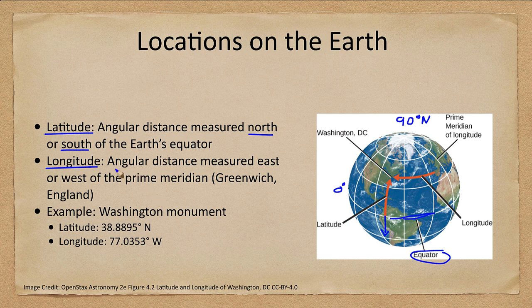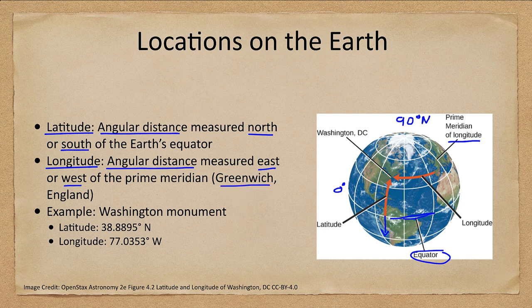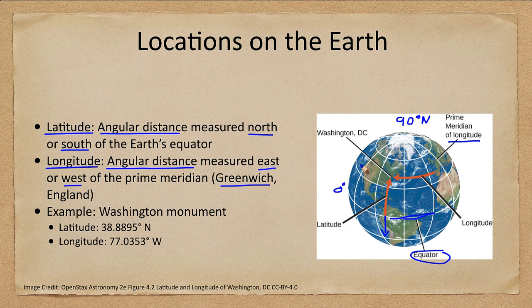Longitude is also an angular distance — both latitude and longitude are angular measures. Longitude is measured east or west of the prime meridian. The prime meridian is defined as the meridian that goes through Greenwich, England. This is simply a convention accepted for hundreds of years, because there is no inherent difference between any of the meridians — any of them could equally well be used to set the zero point.